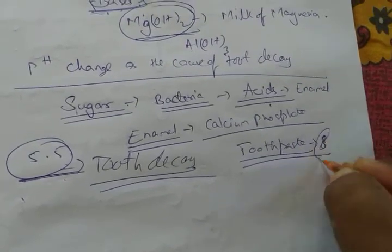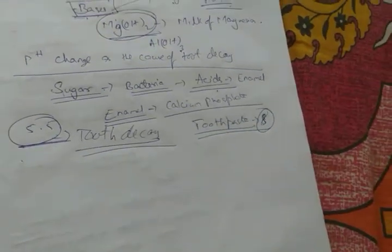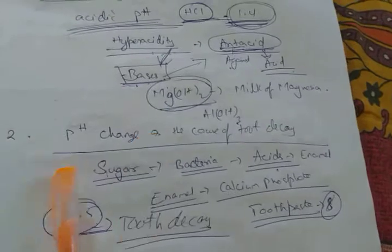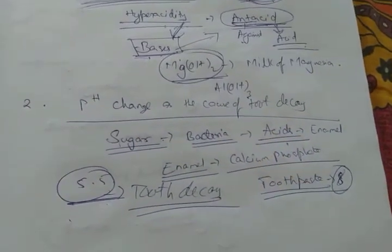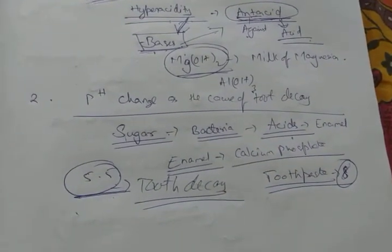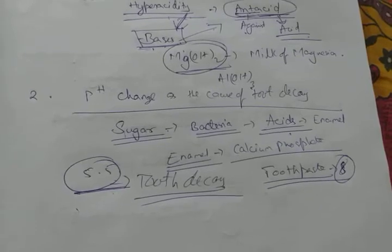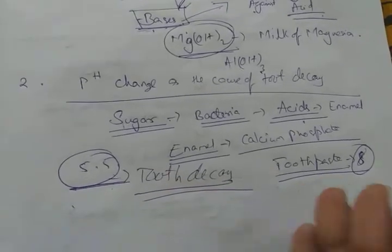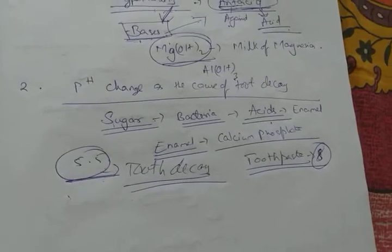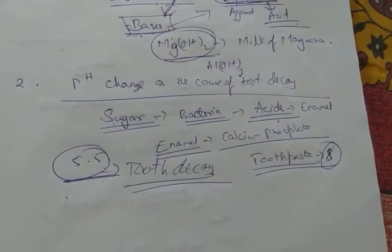This can be treated by using toothpaste which is quite basic with pH around 8. Normally teeth have pH around 6.5-7, but if it falls below 5.5 you will suffer from tooth decay. To prevent it we use toothpaste with pH about 8.